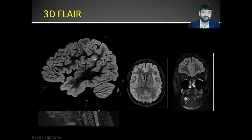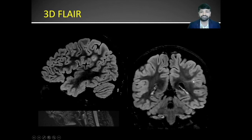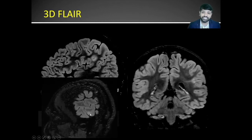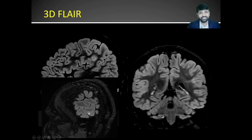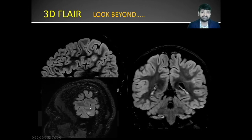Very subtle bright signals in the cortex can be picked up using 3D FLAIR. In cases of focal seizures, even a very tiny area of gliosis can be detected. This tiny abnormality may not be picked up easily on T2-weighted images, but because of the excellent resolution of 3D FLAIR, any bright signal is easier to detect. When looking at the 3D FLAIR sequence, always look for any bright signal in the brain parenchyma, sulcal spaces, or calvarium.